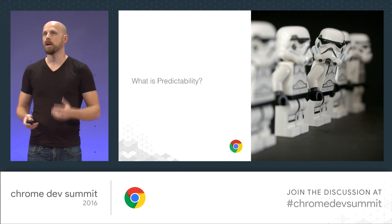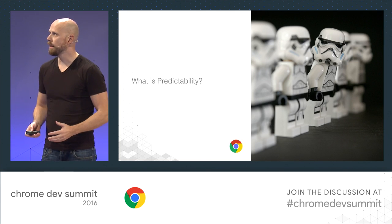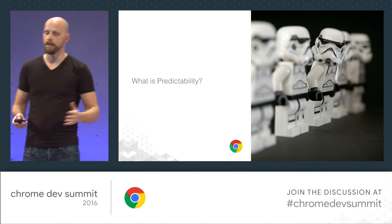The things we're going to talk about today is: what is predictability? You've heard many interesting talks today about new features and all the progressions happening on the web. But what we believe we're covering today is the most important thing — having a reliable platform for developers. If we don't have that, we don't have anything.